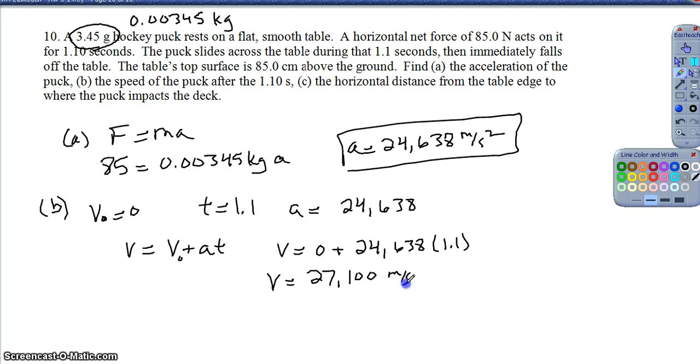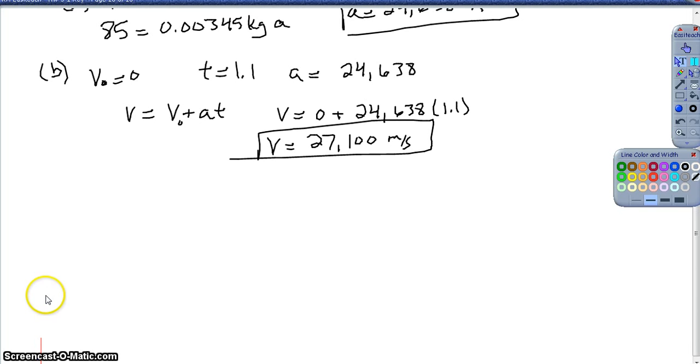And then finally, the horizontal distance from the edge of the table where the puck strikes the ground. You're going to get some ridiculously large numbers, it is a very good question for us to make sure we understand. So here's my table. As the puck leaves the table, it's moving horizontally. It's going to fall down and strike some fairly large distance away. I know the height of the table they told me is 85 centimeters and it is important that I go ahead and convert that to meters, so 0.85 meters.